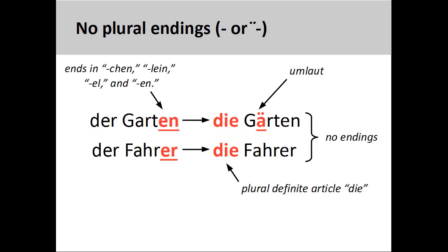Plural endings in German can be organized into roughly five groups. It is very important to memorize these endings when you memorize the gender of a noun.